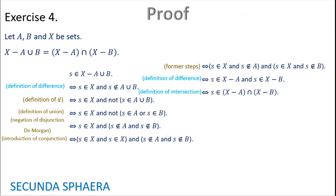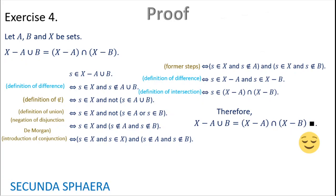All of these steps are connected by equivalences — some of them not shown because there were a lot of steps just to exchange the second and third terms. But we have an argument connected by equivalences, so the starting and the last step are equal, which is what we want.